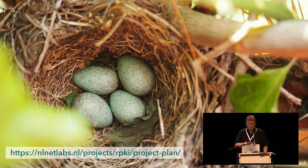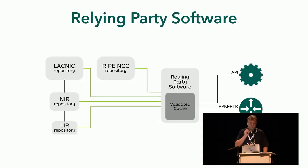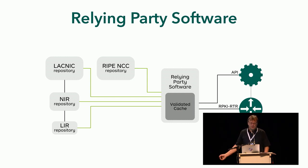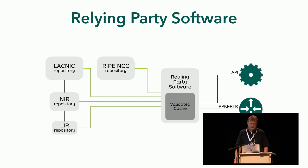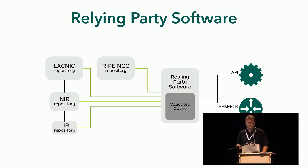This is very early right now. But there's the other part, which is the relying party software — basically the bit that goes around, collects all the statements that are being made, validates them, validates the signatures, and ends up with a list of prefixes and AS numbers that are valid. That seemed to us to be the easier part because you don't need to create certificates and stuff — you just need to validate a bunch of signatures. So we decided to start with that.